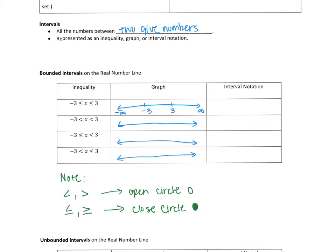Negatives go on the left side, positives go on the right side. When I look at the negative three in this inequality, notice they use an inequality with a line underneath, so I'm going to use a closed circle. When I look at the positive three, there's also a line, so I'm going to use a closed circle as well. Now I color where x is appearing. X is between negative three and positive three, so I'm going to shade that region between them.